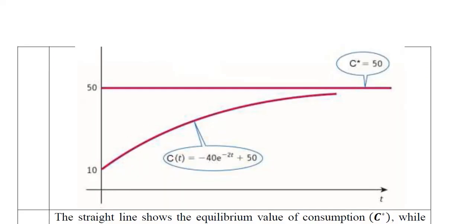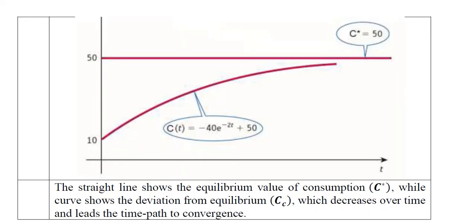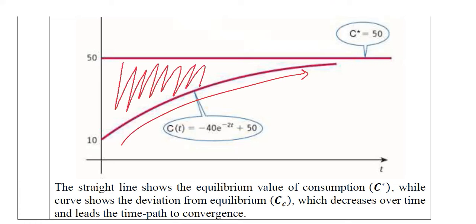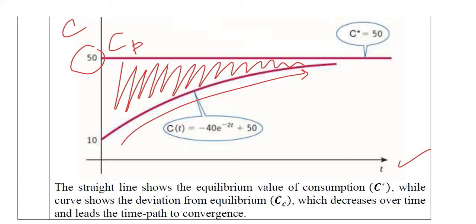Graphically we can see a rise in the time path because the deviation is falling. Time t is on the x-axis and consumption is on the y-axis. The equilibrium level C_P = 50 is shown, and the complementary function C_C is the part that fades away, illustrating convergence to equilibrium.